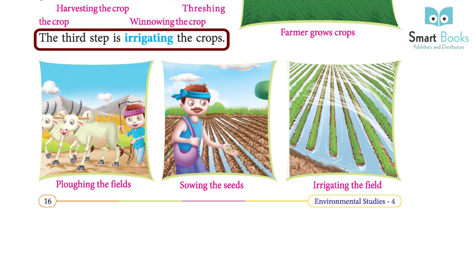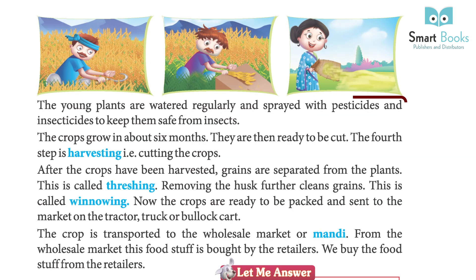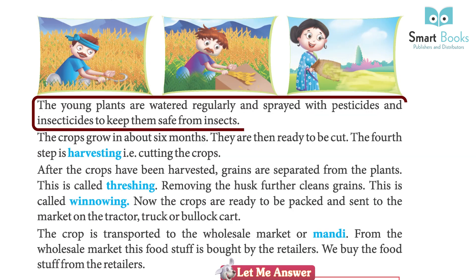The third step is irrigating the crops. The young plants are watered regularly and sprayed with pesticides and insecticides to keep them safe from insects.